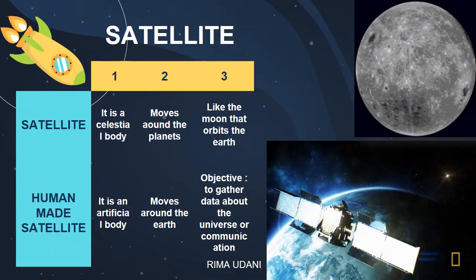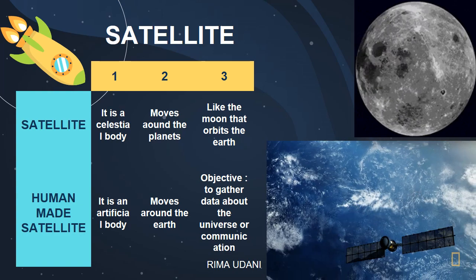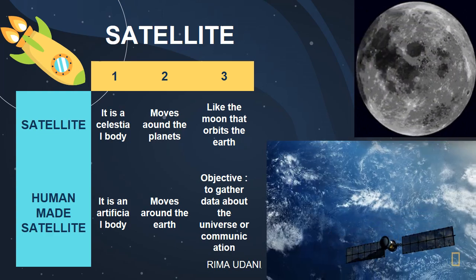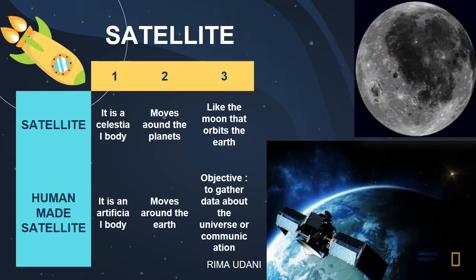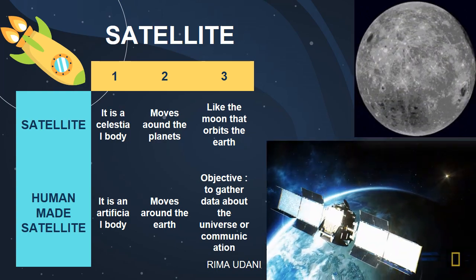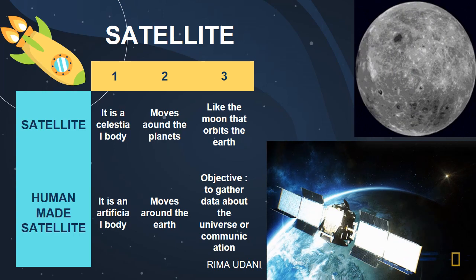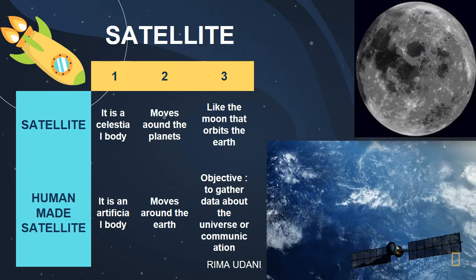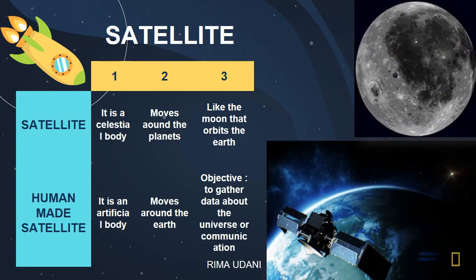Now let's come to satellites. We know that the Moon is a satellite. A satellite is a celestial body that moves around a planet. For us, the Moon is our natural satellite and it orbits around the Earth. There are two kinds of satellites: one is a natural satellite, which is the Moon, and the other is a human-made or artificial satellite. An artificial satellite moves around the Earth and its objective is to gather data about the universe or to communicate. Some of the Indian satellites in space are the INSAT, the IRS, and the EDUSAT.